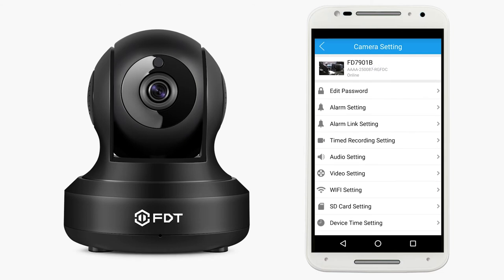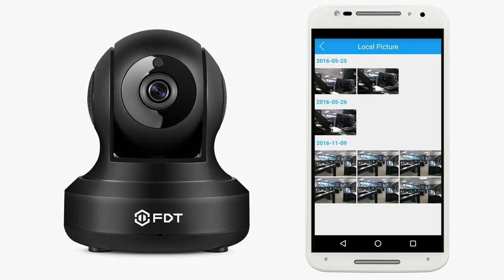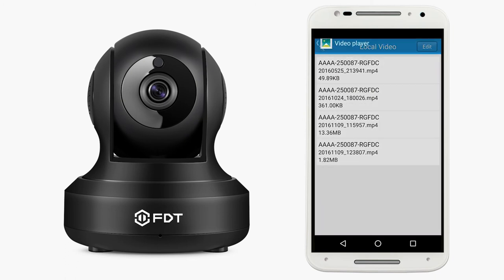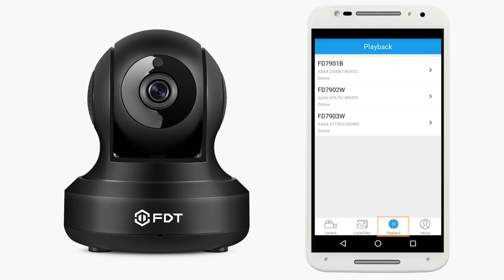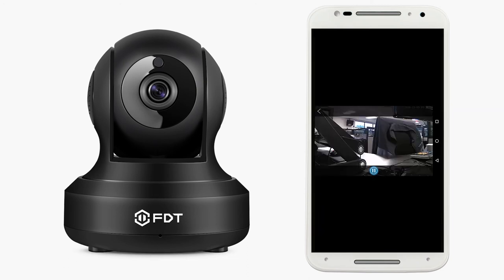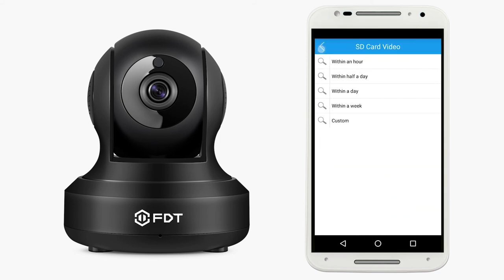In order to view snapshots and videos and playback recorded videos, return to the Home page. At the bottom of the screen, you will see four tabs. Tap on the Local Files tab — here you can browse between pictures and videos saved in your smartphone. Tap on the Playback tab — here you can browse and playback recordings stored in the camera's SD card. You can also tap on the magnifying glass icon to filter files accordingly.